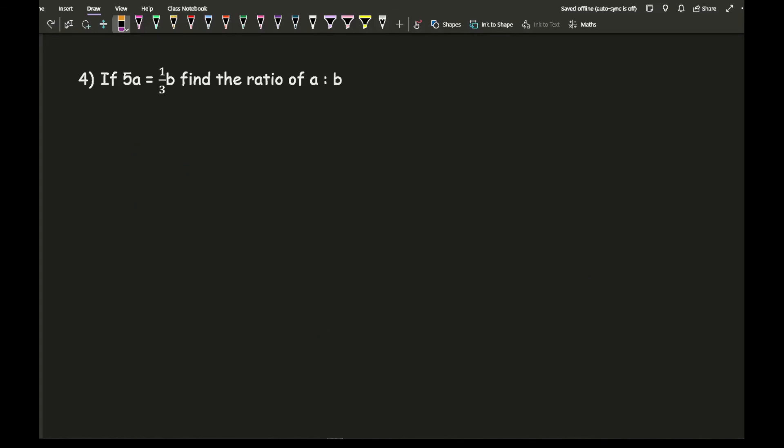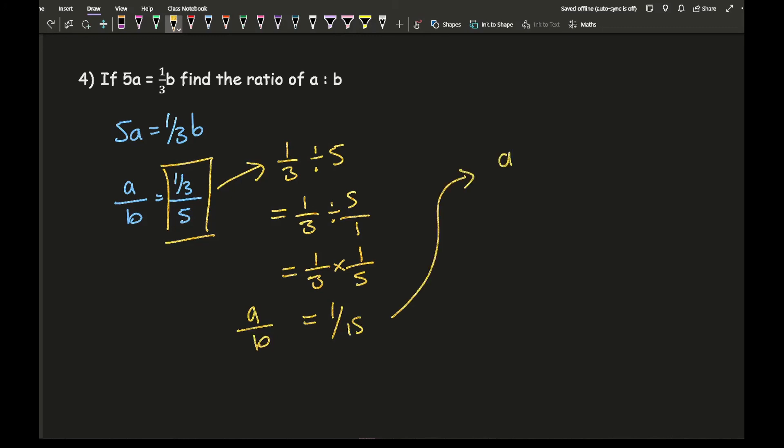Looking at question 4, it says if 5a equals a third b, find the ratio of a to b. I want a over b. So that's going to be a third over 5. What I need to do is convert this into a single fraction. I've got a third divided by 5, which is a third divided by 5 over 1, which is the same as a third times 1 over 5, which is the same as 1 over 15. So a over b equals 1 over 15. Converting that into a ratio gives me 1 to 15.